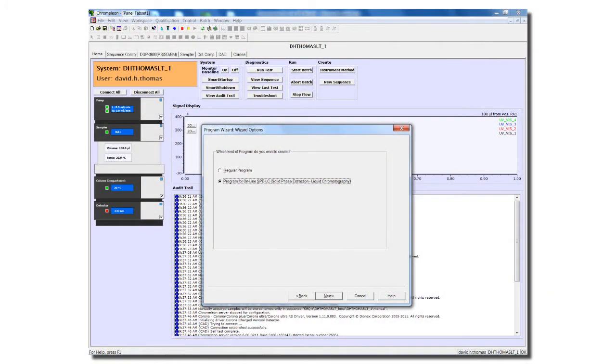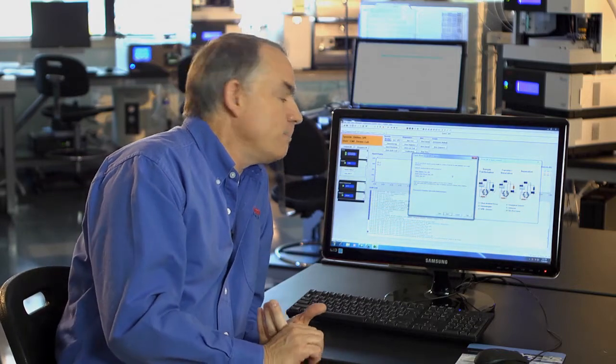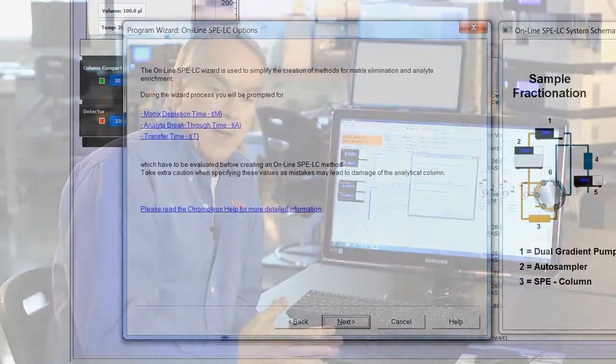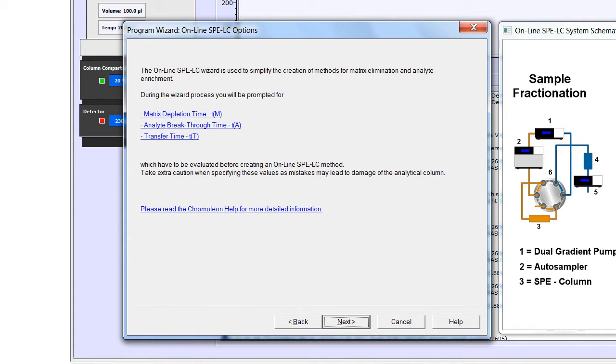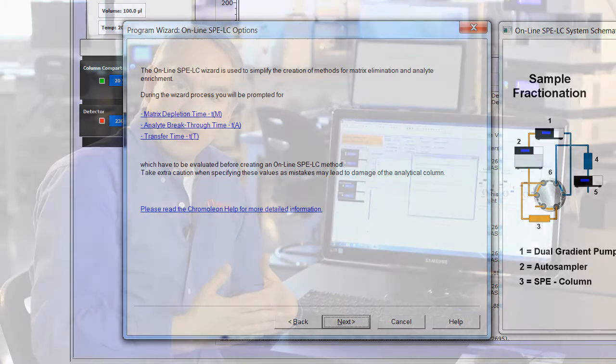Say next and really we only have three very simple parameters that we have to enter into the program and they are steps for the matrix depletion time. How much time do we want to allow the first pump to remove the matrix components? The second is the analyte breakthrough time.